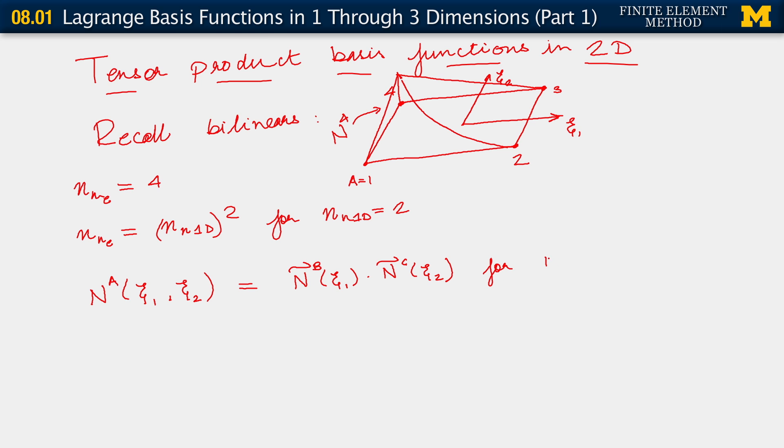For B, C, equals 1 up to number of nodes in 1D. This is the general formula.